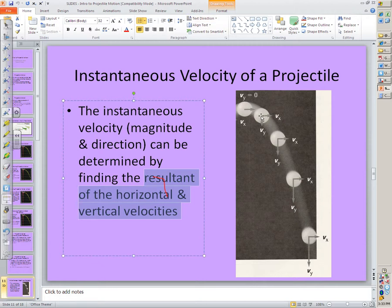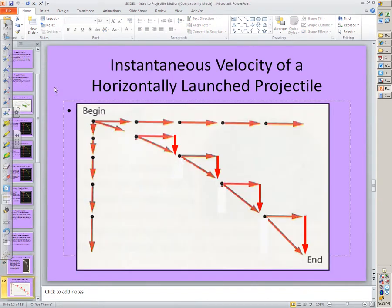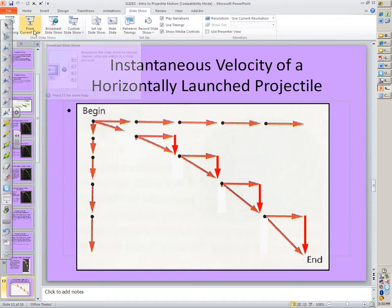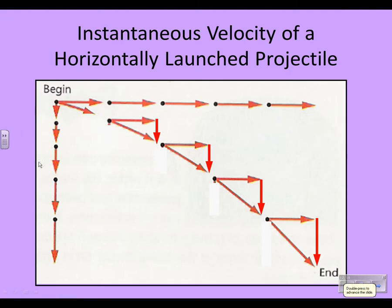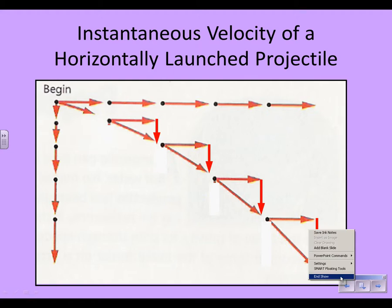When an object is moving in two dimensions, we can find the instantaneous velocity as the resultant of the horizontal and vertical velocities. The horizontal velocities remain exactly the same the entire time, but the vertical velocities keep increasing. The result is a bigger and bigger resultant velocity, which is the hypotenuse of the right triangle formed by those two velocities. That's how you find instantaneous velocity.